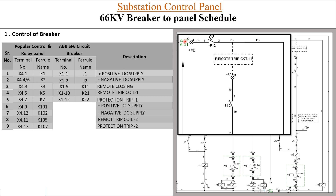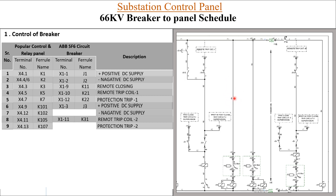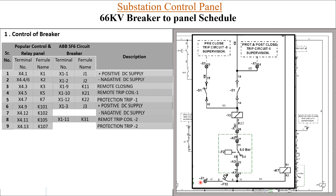For trip coil 2 in the breaker drawing: positive DC supply is at X1, terminal 3, with ferrule name J3. Remote trip coil 2 connects at X1, terminal 11, with ferrule name K31. Negative DC supply for coil 2 is at X1, terminal 4, ferrule name J4. Protection trip 2 is also noted in the drawing.